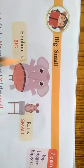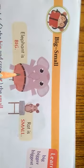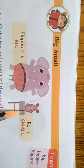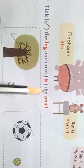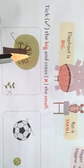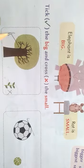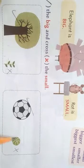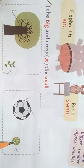Now we study big and small. Big means bada. Small means chota. Elephant is big — elephant kya hai? Bada. Rat is small — chota. Look at the question: tick the big and cross the small. In the first picture, which is big? Yes, the tree — put the tick. This one is small — put the cross. Which ball is big? Yes, this one — put the tick. This one is smaller — put the cross.